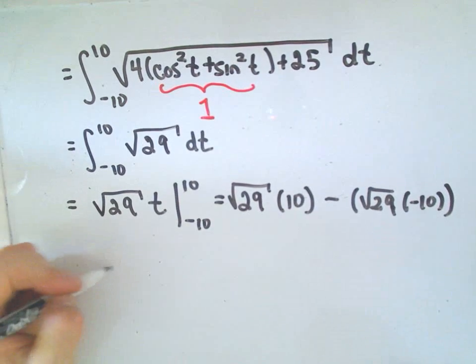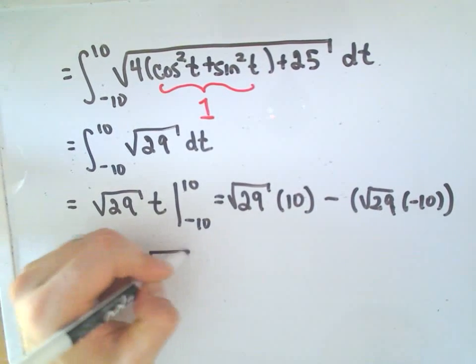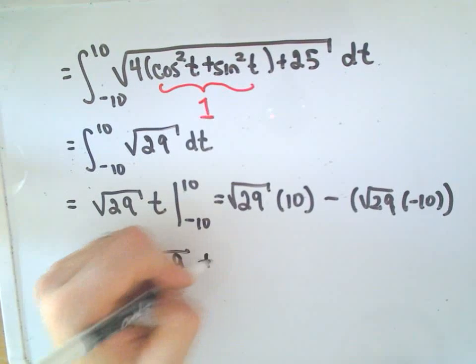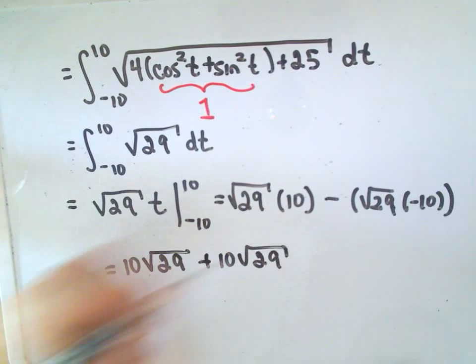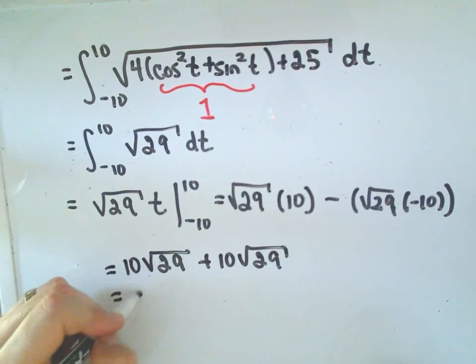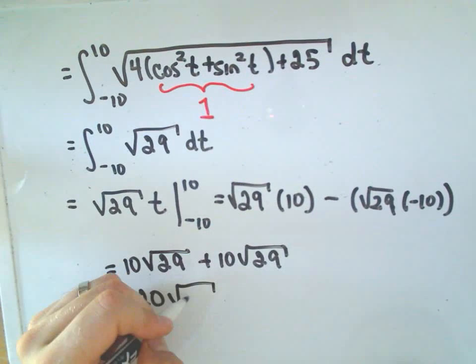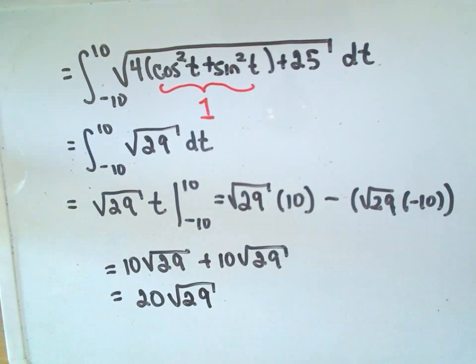That's just simply 10 square root of 29, plus another 10 square root of 29. That gives us 20 times the square root of 29. 29 is prime, so we can't clean up the radical at all.